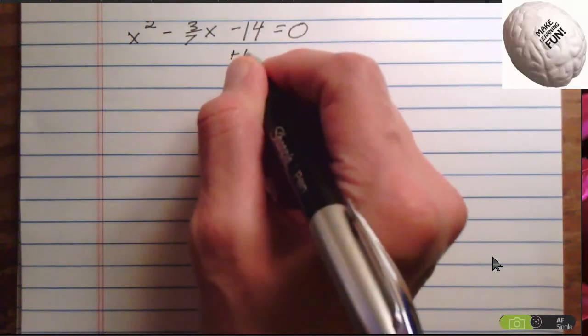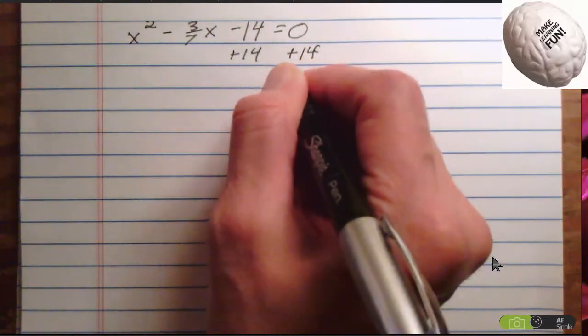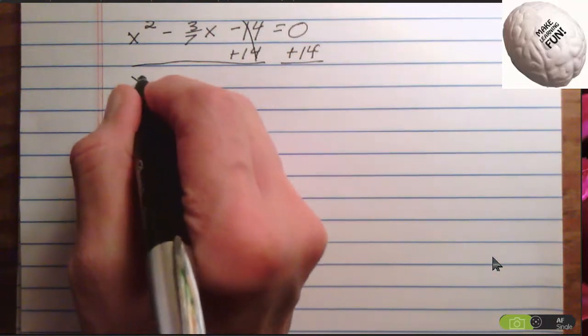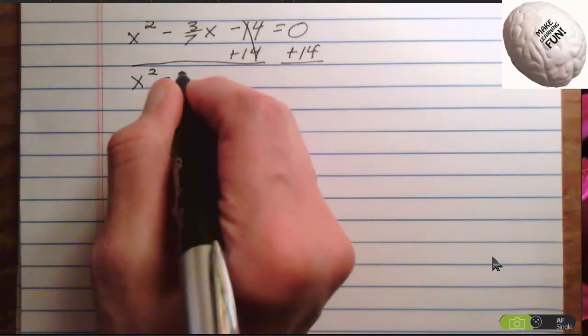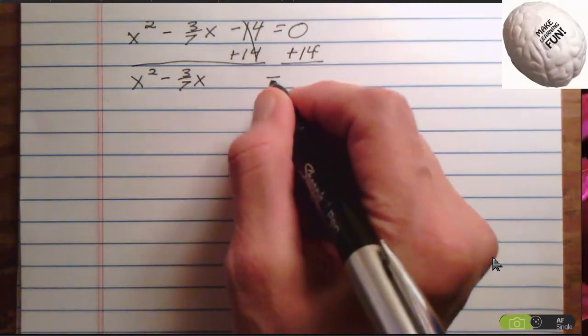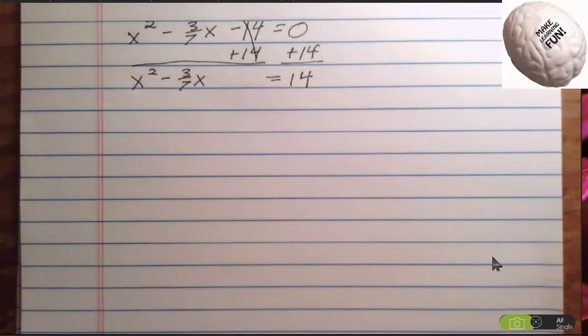I'm going to add 14 to both sides. So I'll have x squared minus 3 sevenths x equals 14. Now I complete the square.